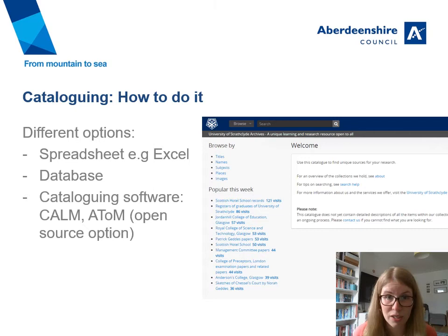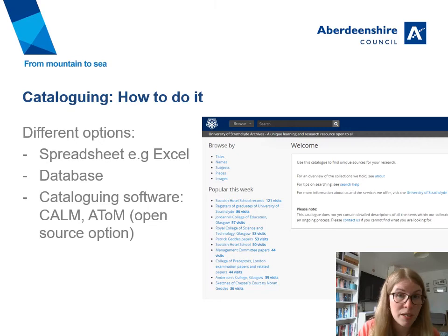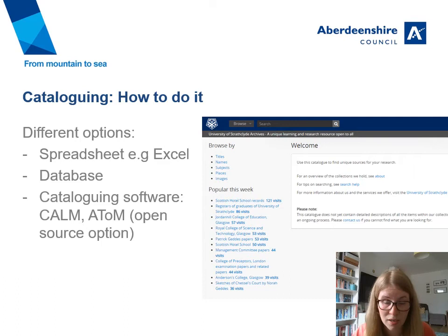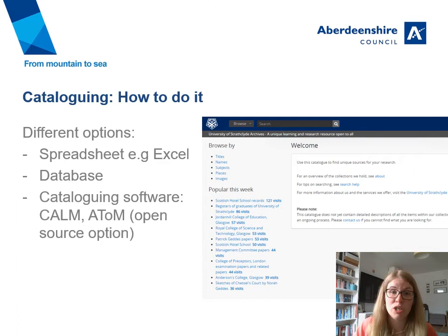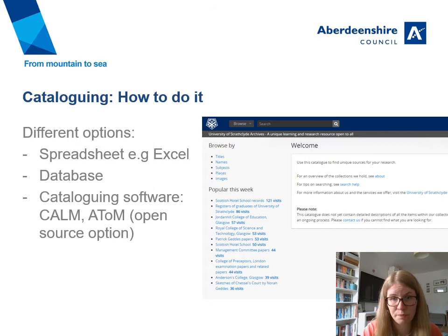In terms of how to do it: ideally you would avoid using Word — it's good to structure the information you're going to record with a different field for each unit of description, structuring the data. You could use a spreadsheet like Excel, or a database, which is a bit more complicated to set up. There's also cataloguing software available — we use CALM, but there is a cost associated with that. There is also open-source software called AtoM, which is used by the University of Strathclyde; I've included an image of their online catalogue here so you can see how that looks.